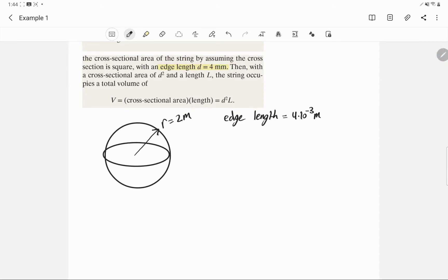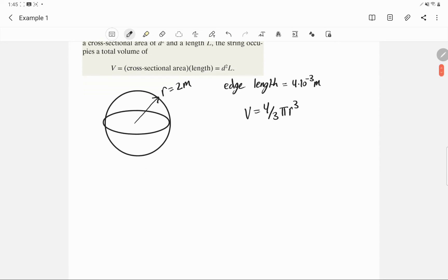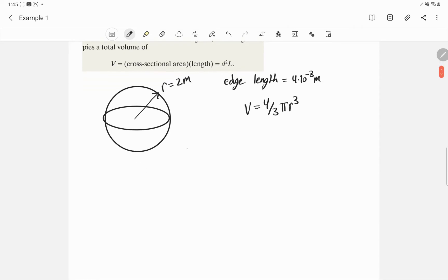So how we're going to relate to find the length, as shown later in the problem, is through volume. So we know that the volume of a sphere is equal to 4 over 3 pi r cubed. And now for relating the volume of the ball to the string, the way that the textbook decides to approach it is we're going to assume that the string is essentially a rectangular prism.